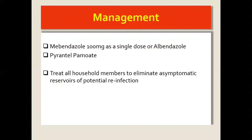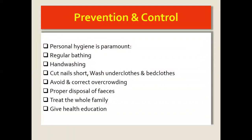Treatment is quite straightforward. You treat with mebendazole — a single dose of 100 milligrams — or albendazole; those are the drugs of choice. You can also use pyrantel pamoate. Importantly, treatment has to cover everyone — every person in the family, or every person within that boarding institution.